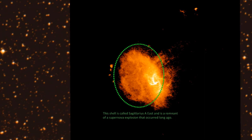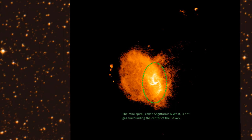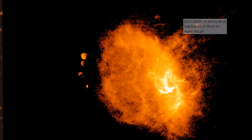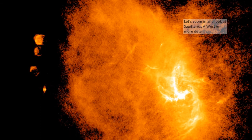This shell is called Sagittarius A East, and is a remnant of a supernova explosion that occurred long ago. The mini-spiral, called Sagittarius A West, is hot gas surrounding the center of the galaxy. Let's zoom in and look at Sagittarius A West in more detail.